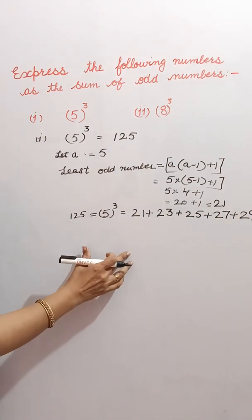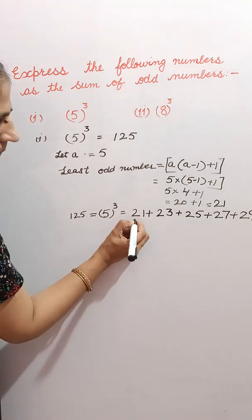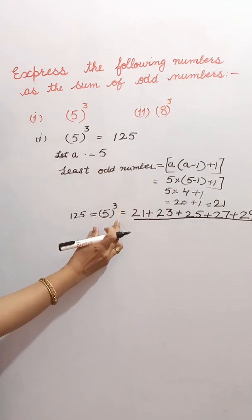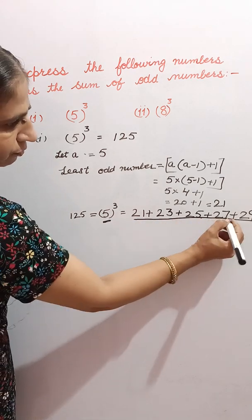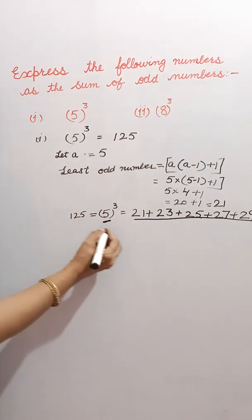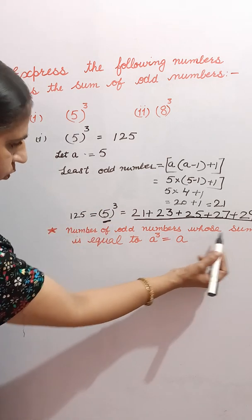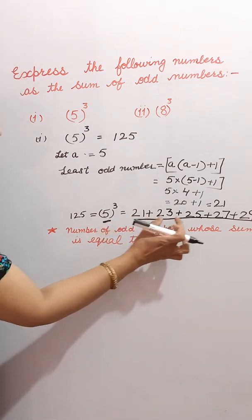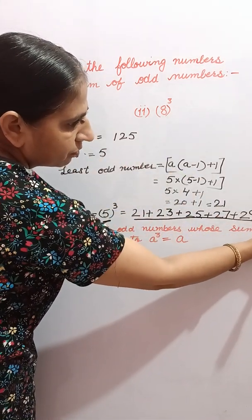You can see the number of odd numbers whose sum is equal to the cube of this number is always equal to this number: 1, 2, 3, 4, 5. The number of odd numbers whose sum is equal to A cube is always equal to A. You can see: 1, 2, 3, 4, 5 — A is equal to 5.